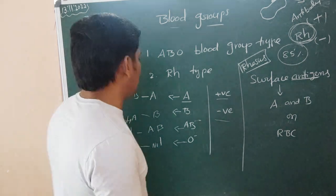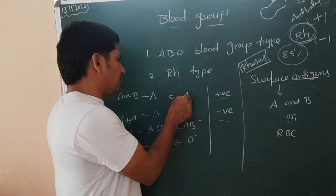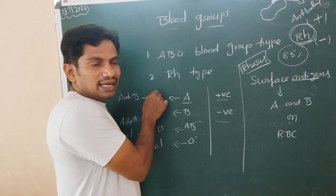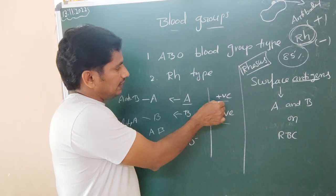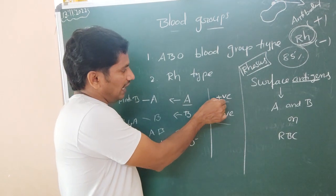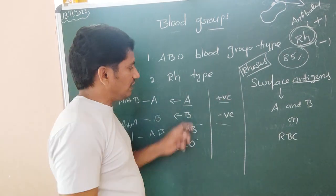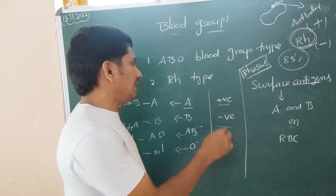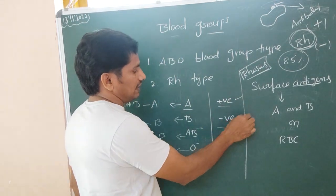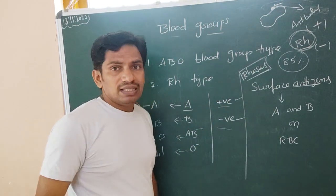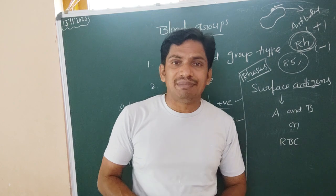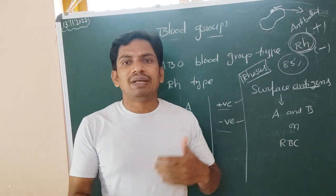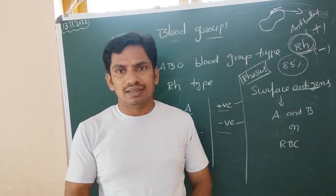Here the case is: people who have the RBC surface antigen A and also the RH antigen are called A positive. If they don't have the RH antigen, they are A negative. The RH incompatibility must also be checked before blood transfusion from one person to another.